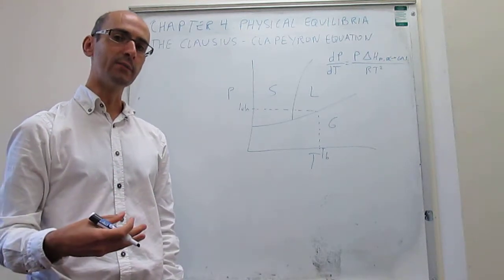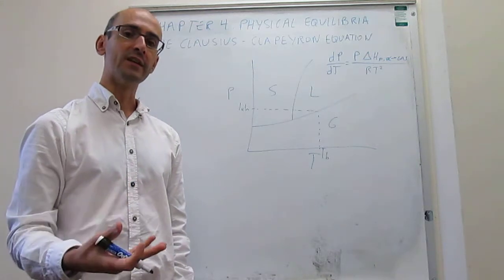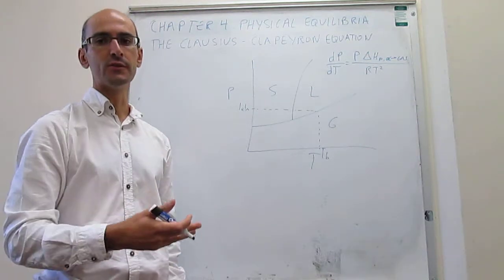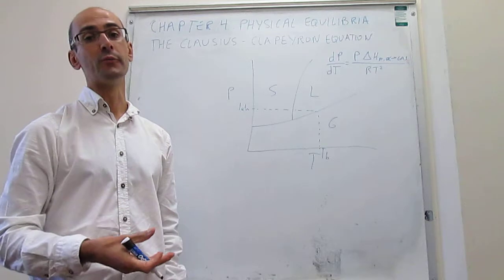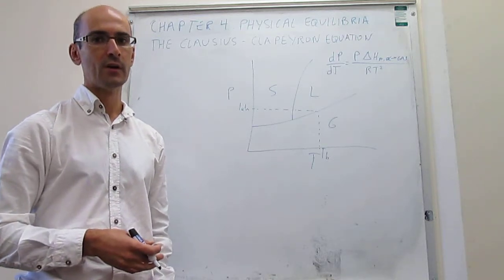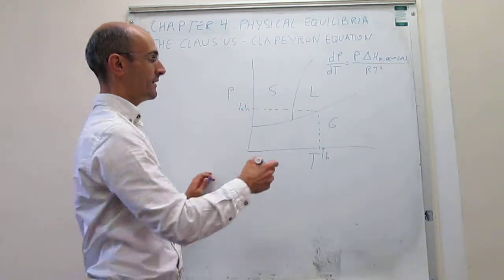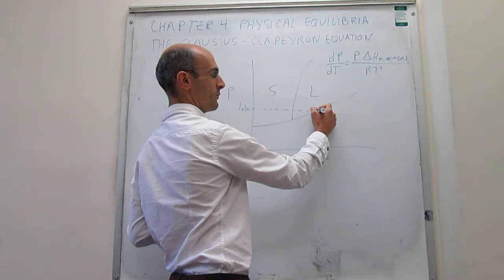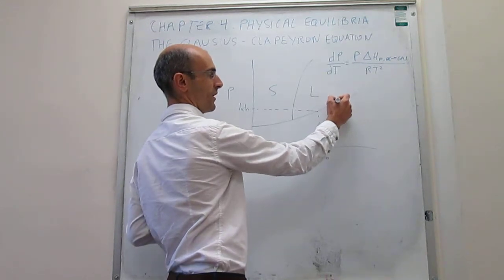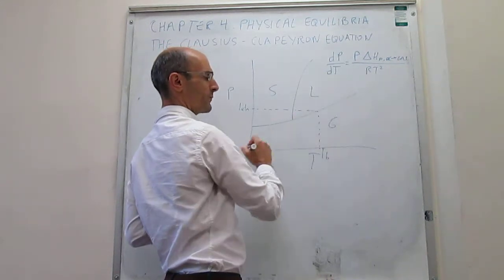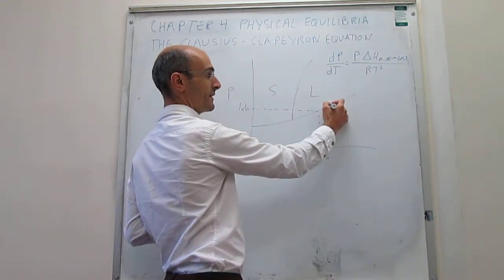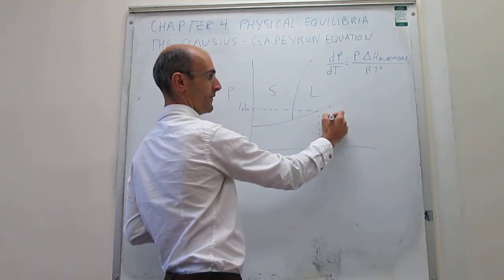The question we might ask is: can you predict what the boiling point would be if you change the pressure to, say, two atmospheres or half an atmosphere? It turns out you can do that if you know how the slope of this line is changing as you move to higher or lower pressures. Then you can predict exactly what the new boiling point will be.